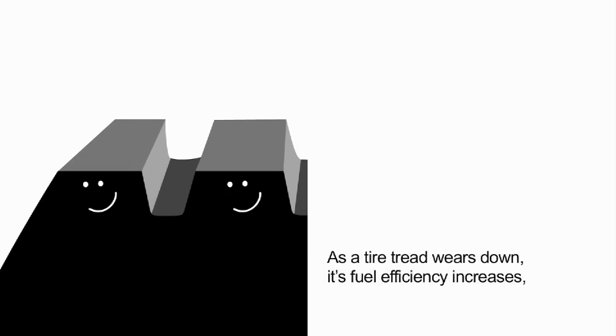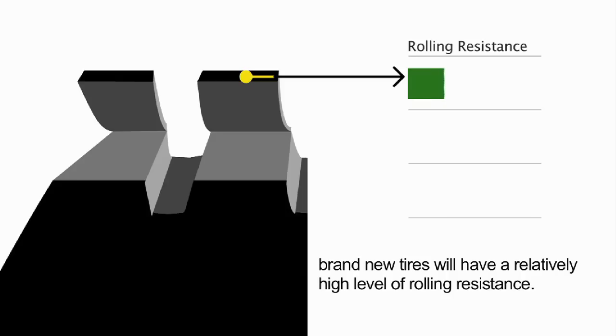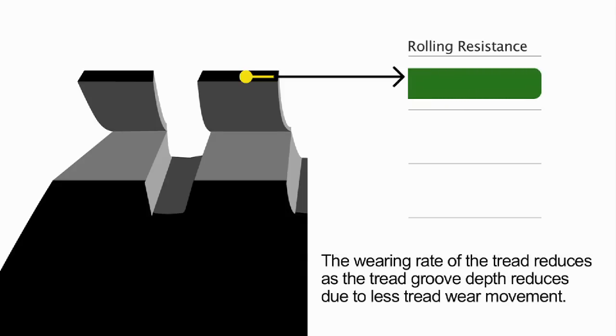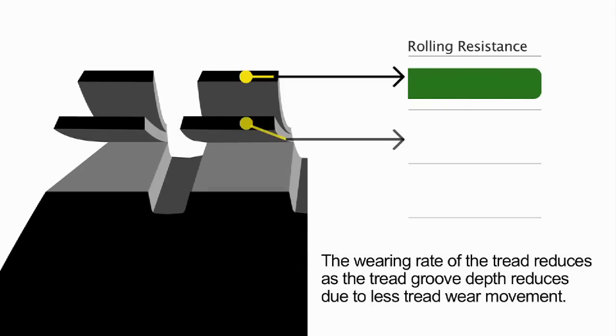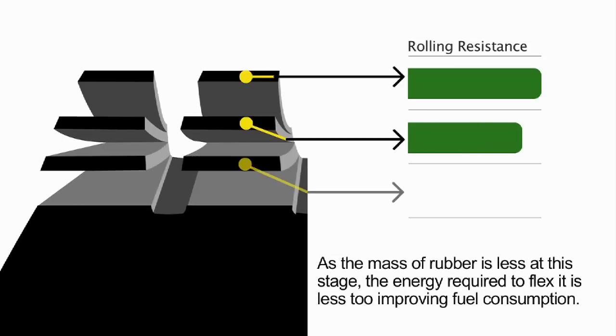As a tire tread wears down, its fuel efficiency increases. Brand new tires will have a relatively high level of rolling resistance. The wearing rate of the tread reduces as the tread groove depth reduces due to less tread movement. As the mass of rubber is less at this stage, the energy required to flex it is less too, improving fuel consumption.